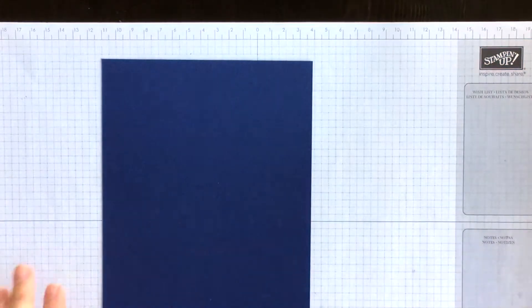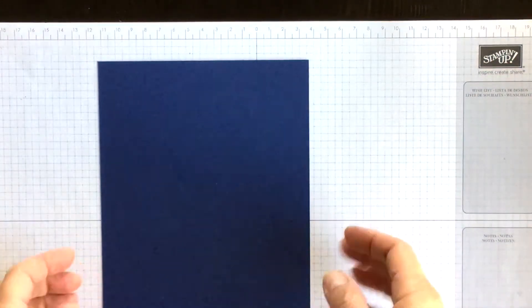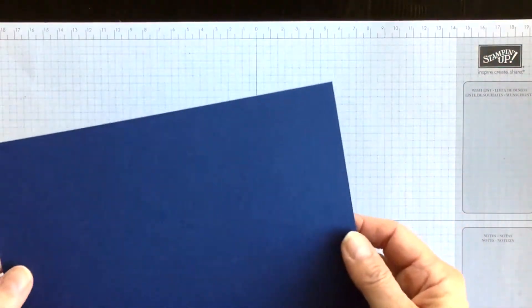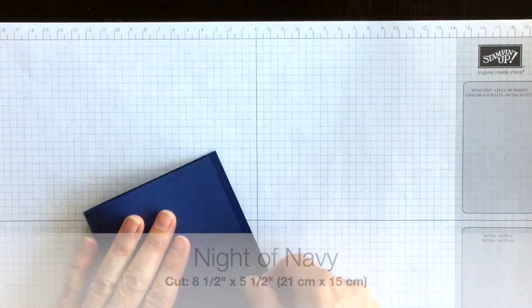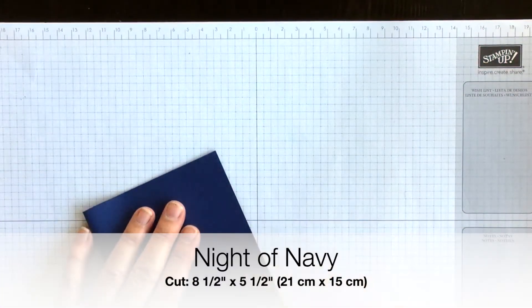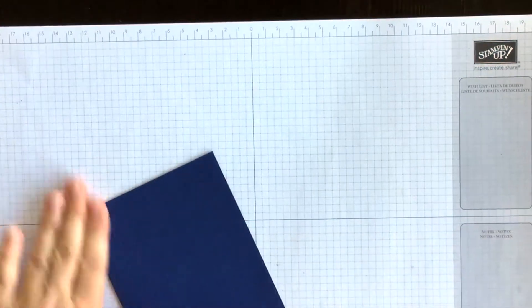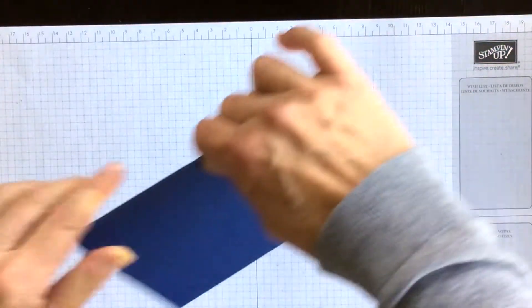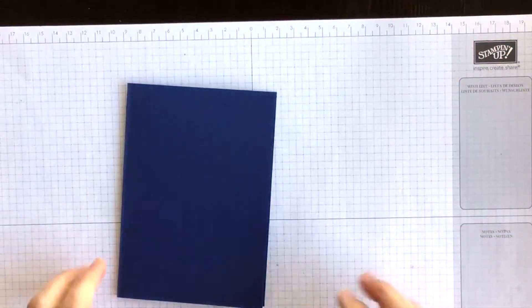with the help of my Big Shot and the Happiness Blooms product suite. My card base is going to be Knight of Navy, cut eight and a half by five and a half, and I'm going to fold it on the four and a quarter mark. That's going to be my card base.